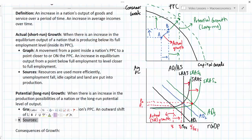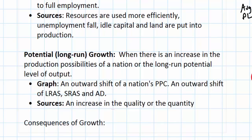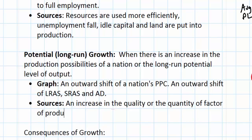What are the sources of long-run economic growth? What can cause the potential output of a nation to increase over time? The sources of long-run economic growth are slightly different than those from short-run growth because it requires an increase in the quality or the quantity of productive resources — factors of production — by which we mean land, labor, and capital.